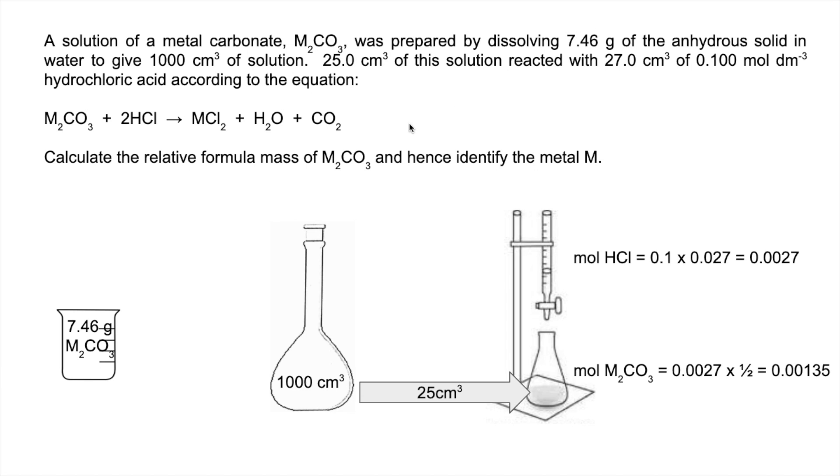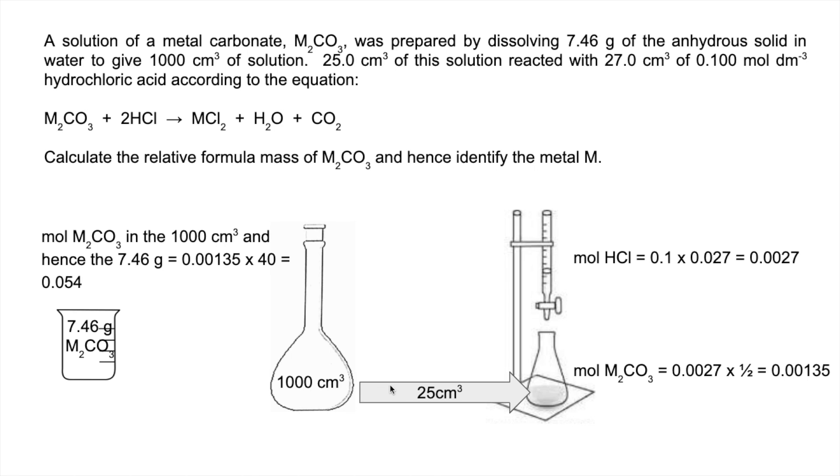The number of moles that must have been in this flask here is going to be 40 times that, because 25 cm³ is a 40th of a thousand. So the moles of M₂CO₃ in the thousand cm³, and also the 7.46 grams, is 0.054. Just remember those 7.46 grams of the carbonate dissolved in water and then they're literally just poured in there. So the moles in these two containers are the same.